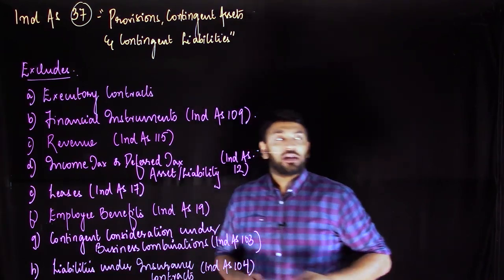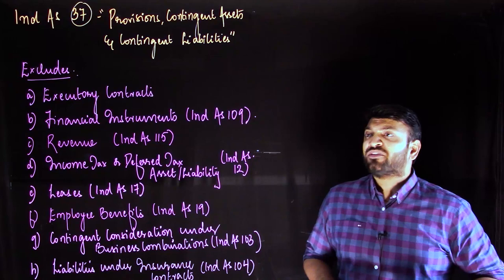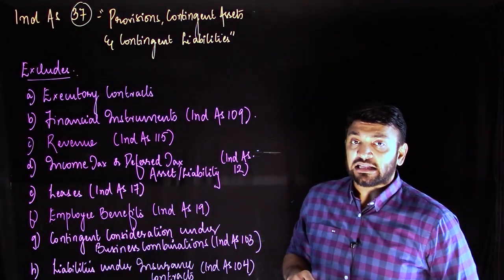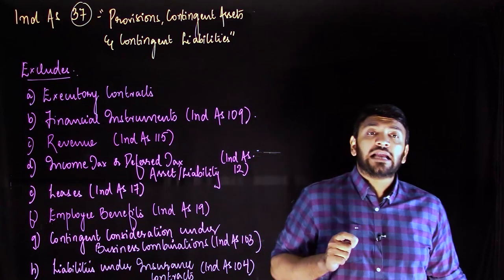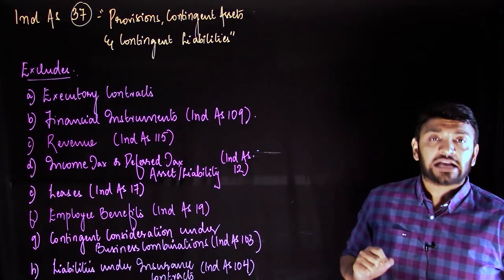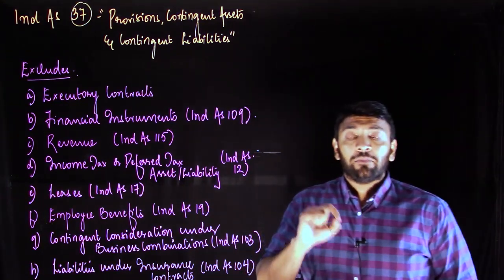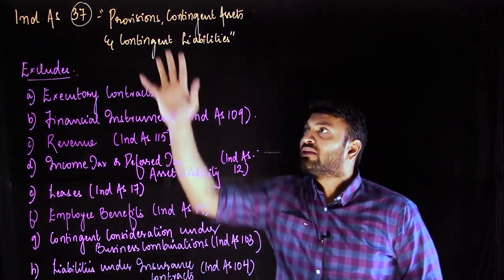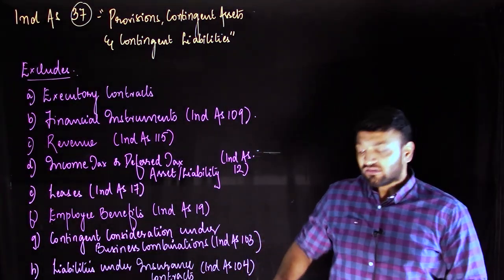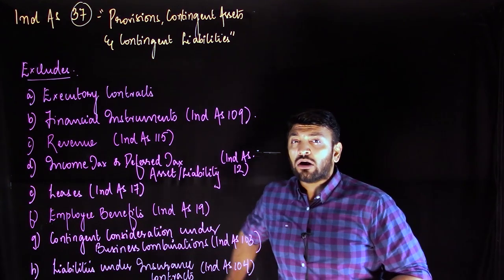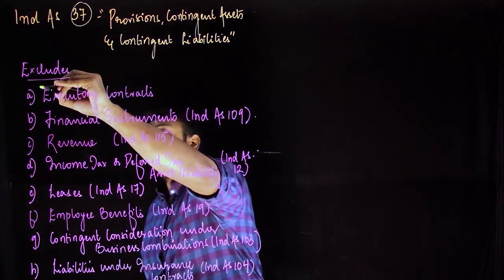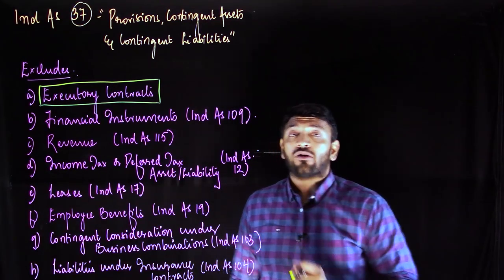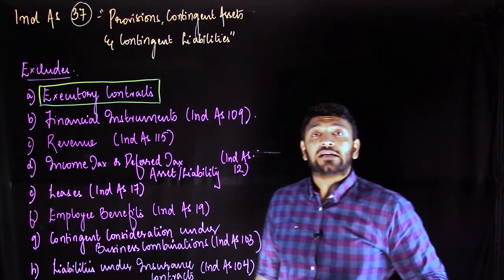This long list of exclusions exists because those respective standards specifically address the liabilities arising in each situation — for example, lease liability measurement under Ind AS 17, or defined benefit obligations under employee benefit standards. Executory contracts are peculiar in nature and are specifically excluded from the scope of Ind AS 37.